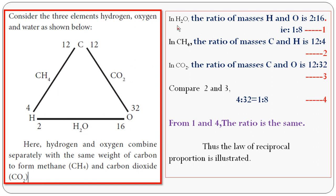In water, the ratio of masses of H and O: atomic mass of hydrogen is 1, there are 2 hydrogens so 2 into 1 equals 2; atomic mass of oxygen is 16. So the ratio is 2 is to 16, which simplifies to 1 is to 8. That is equation 1. In methane CH4, the ratio of masses of C and H: atomic mass of carbon is 12, atomic mass of hydrogen is 1, there are 4 hydrogens so 1 into 4 equals 4. So the ratio of carbon to hydrogen is 12 is to 4. Take this as equation 2.